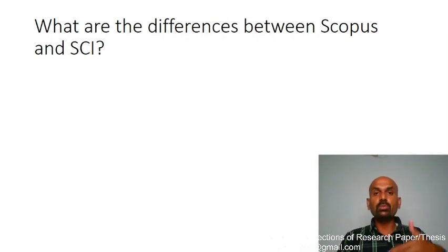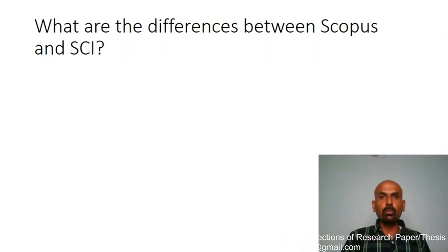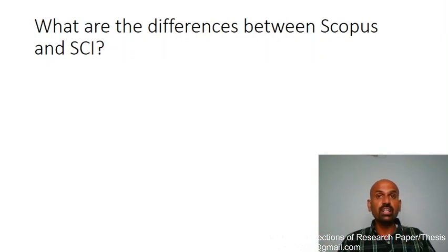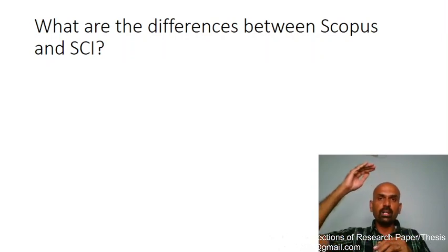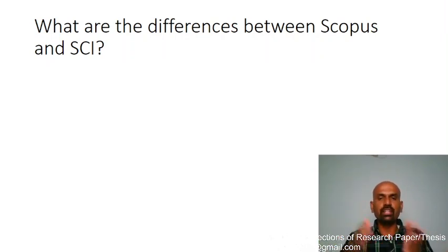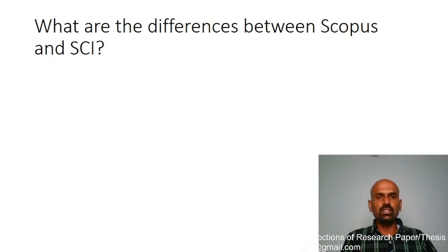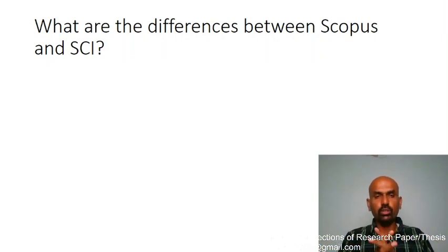The SCI indexing process is very difficult, citation requirements are very high, and SCI has only a limited number of journals whereas Scopus has more. An important difference: all Web of Science (SCI) journals are also in Scopus the majority of the time, but not all Scopus journals are in Web of Science. All Web of Science papers are of high quality so you will find them in Scopus too, but not all Scopus journals are in Web of Science. SCI has fewer journals; Scopus has comparatively a huge number.